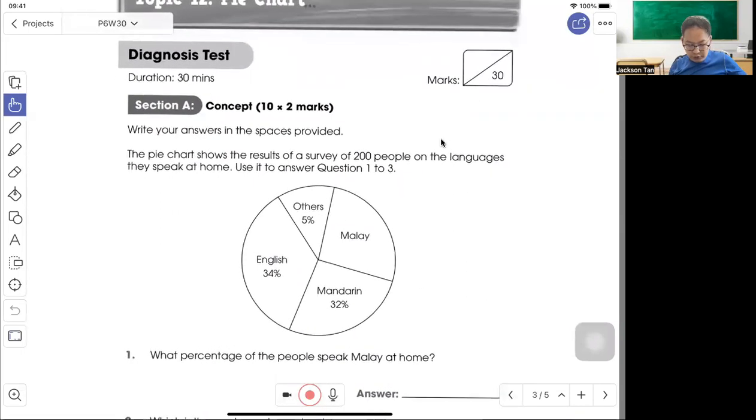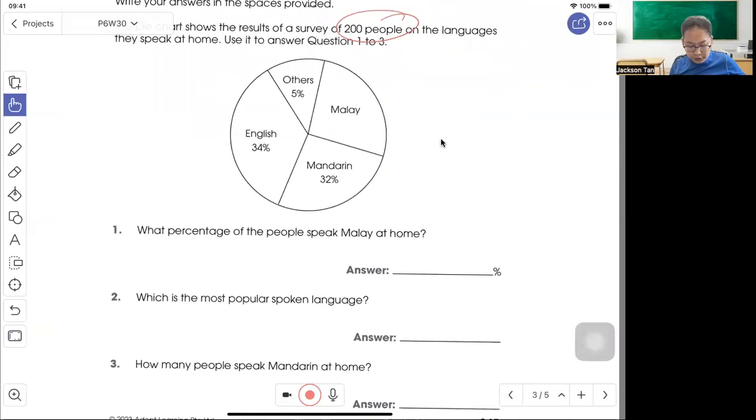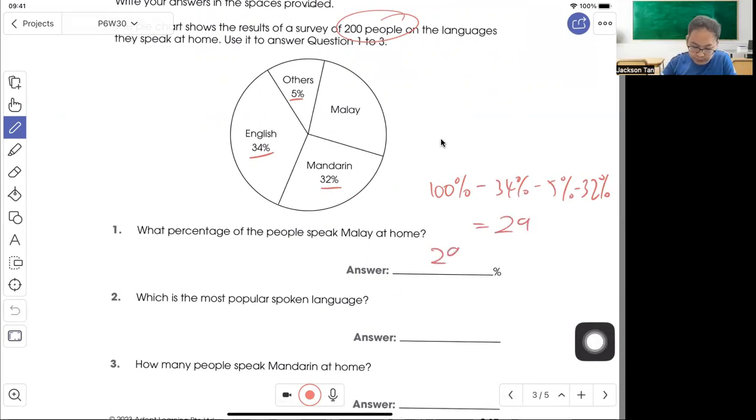So the pie chart shows the result of a survey of 200 people that speak at home. What percentage of people speak Malay? So just 100% minus 34, 5, and 32. You'll get the answer 29. Then which is the most popular? So popular is English. We have 34%.